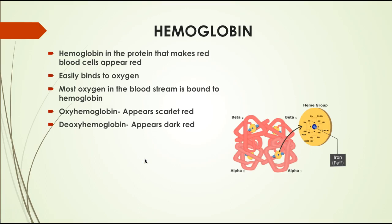Hemoglobin is the protein that fills the red blood cells. Most oxygen in your bloodstream is bound to hemoglobin. When hemoglobin is bound to oxygen it is called oxyhemoglobin, and it appears scarlet red. When hemoglobin is not bound to oxygen, it appears dark — a purplish, dark color — which is why most veins in your body appear blue. Hemoglobin changes color depending on whether it is bound to oxygen or not.